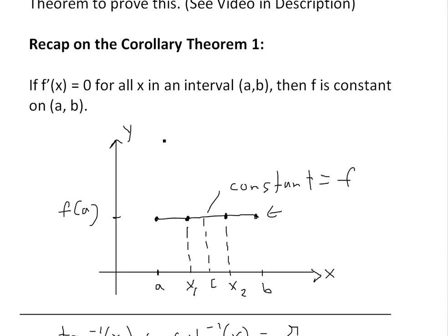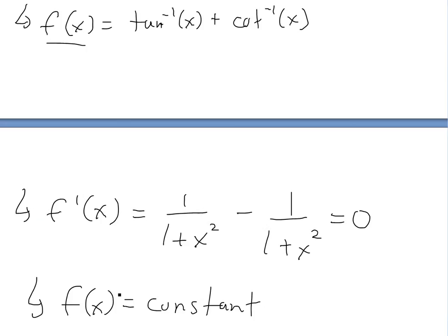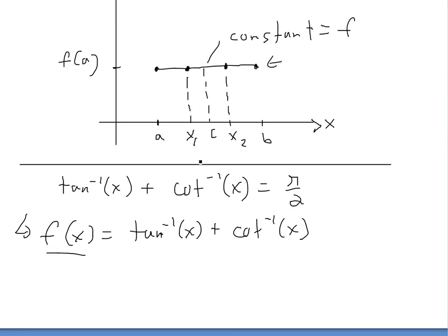By this corollary theorem, since f'(x) = 0 for all x in an interval, in this case all values of x, then f is constant. Thus, we have f(x) equaling to a constant.